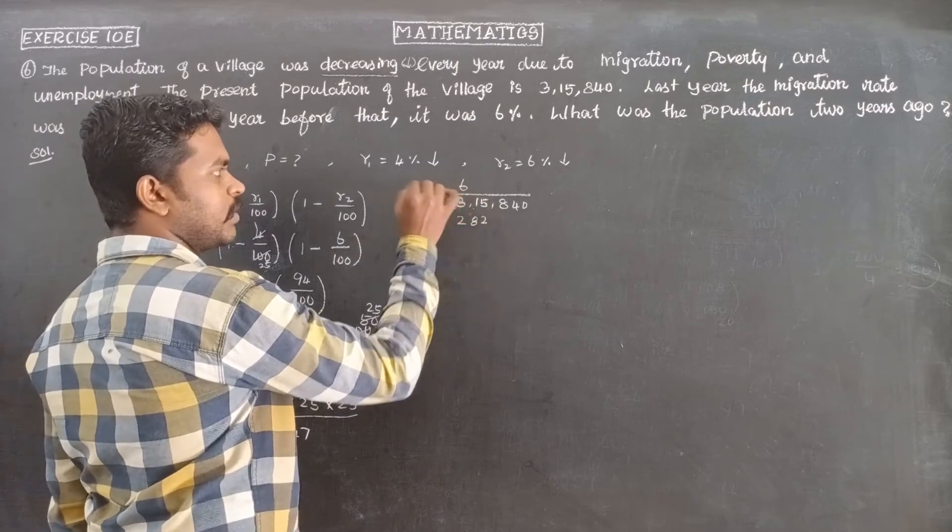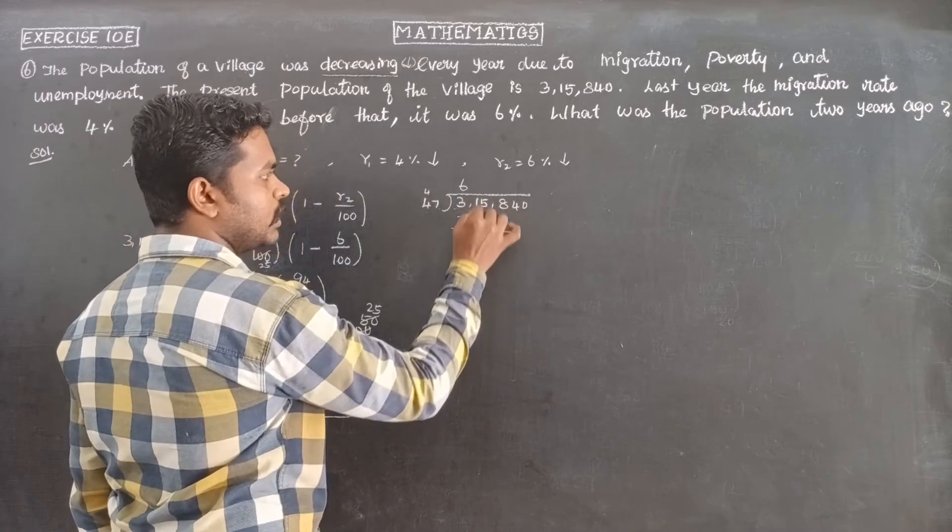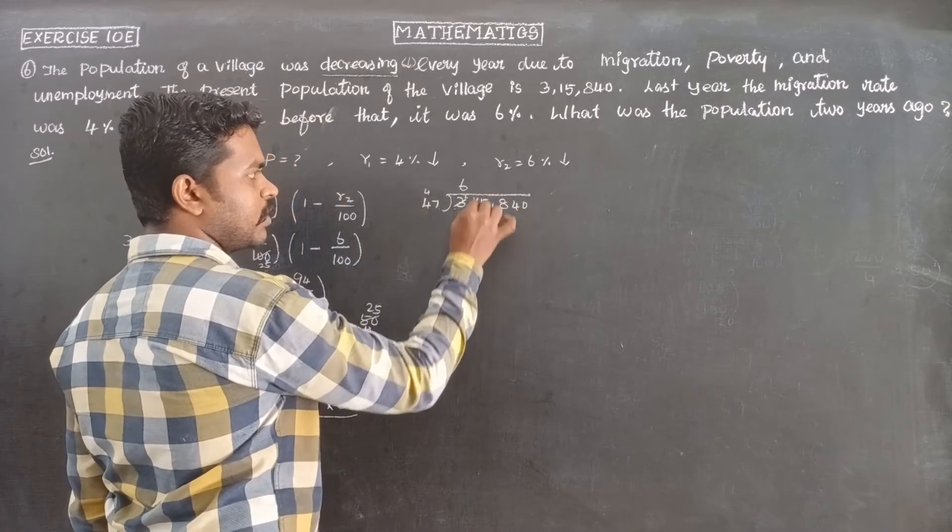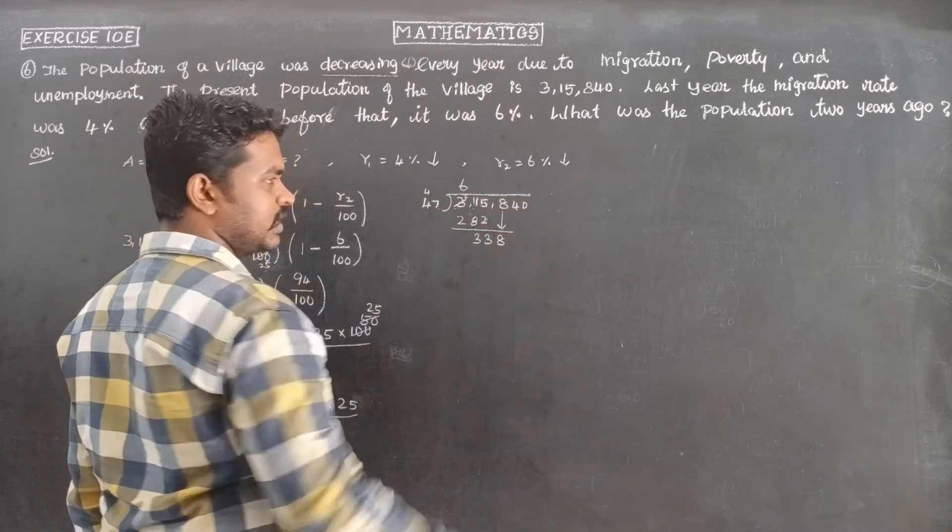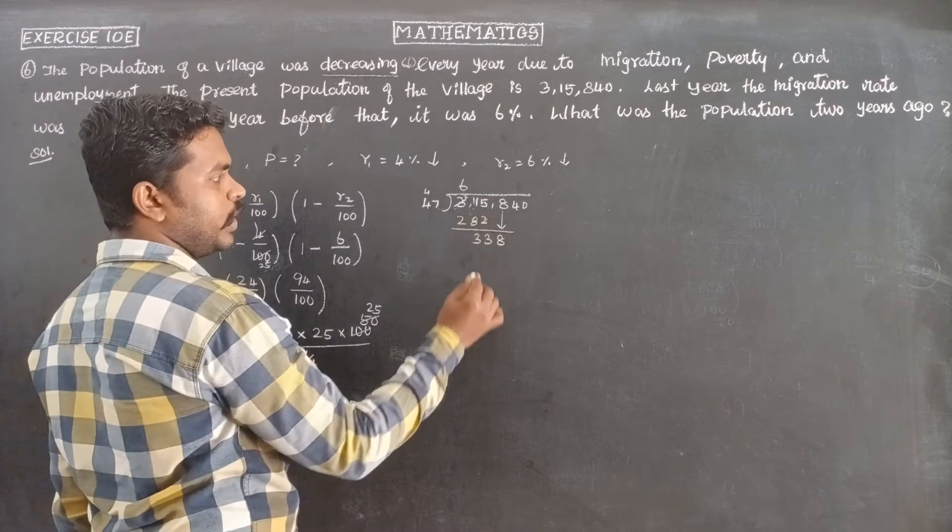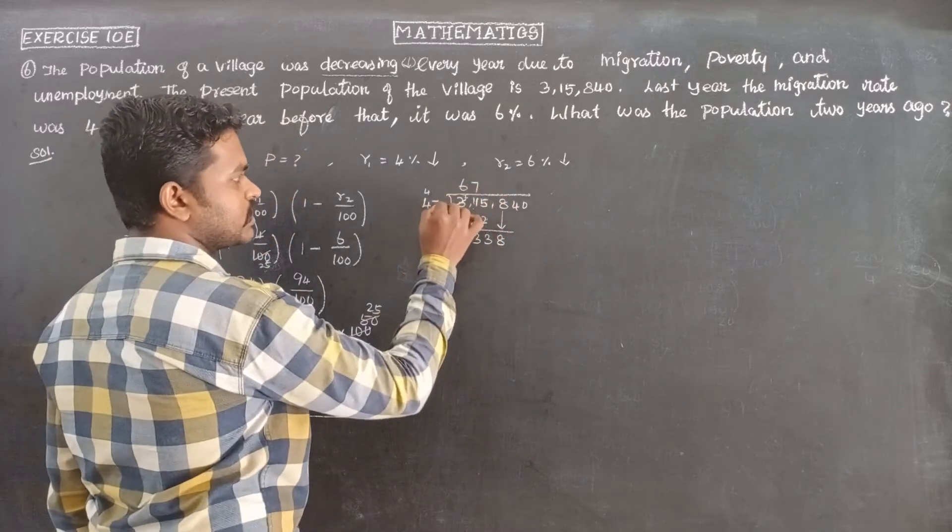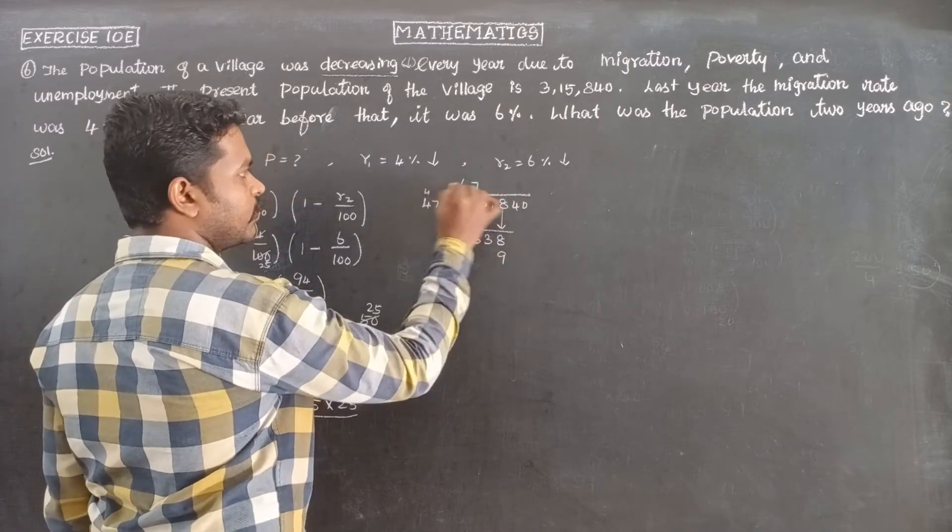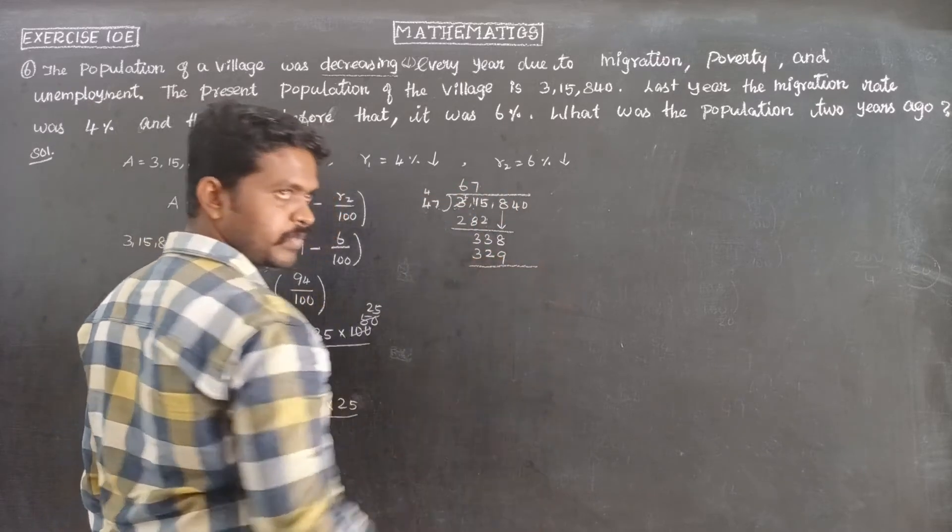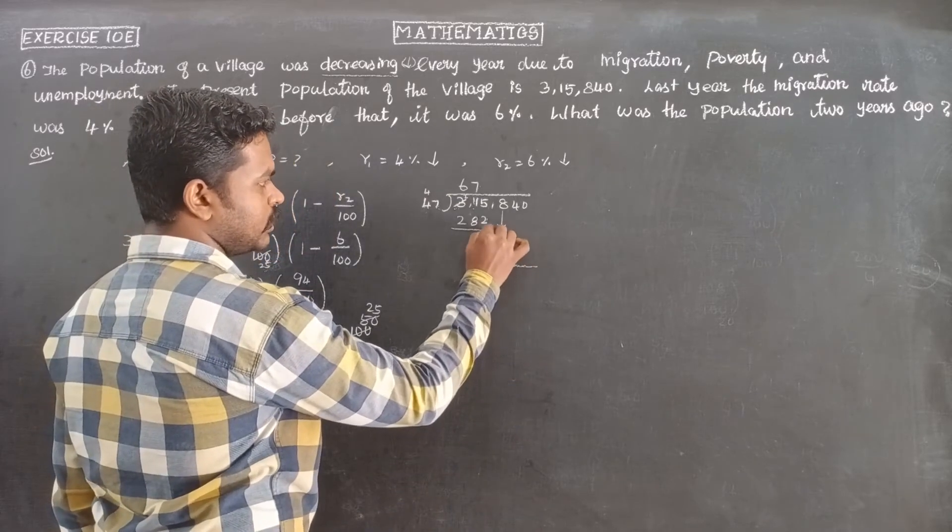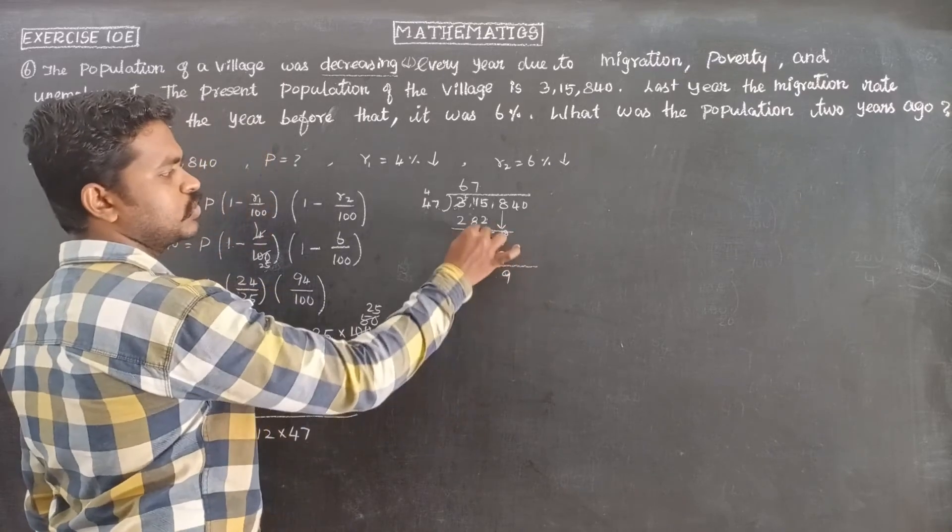Continuing the division: 7 times 7 is 49, remaining 4. 7 times 4 is 28, 28 plus 4 is 32. Subtracting: 8 minus 1, then we get 18. 18 minus 9 is 9, 2 minus 2 is 0, 3 minus 3 is 0.